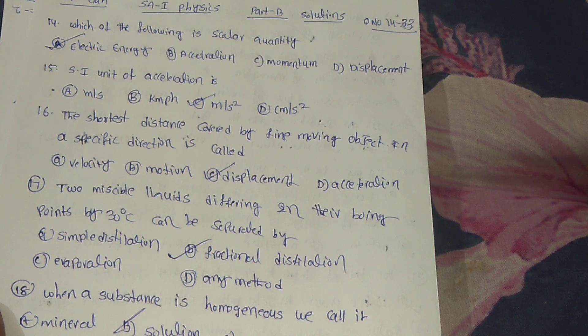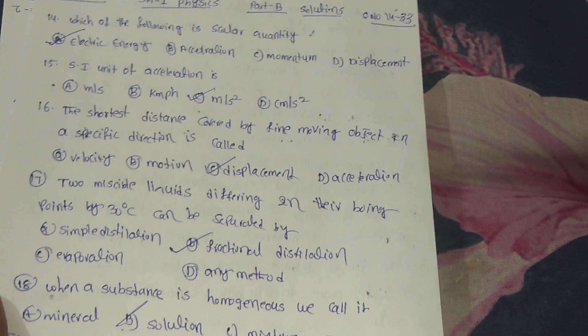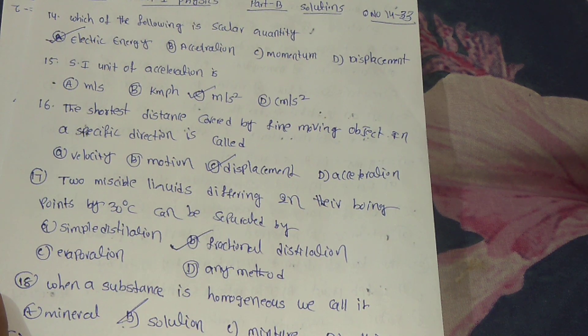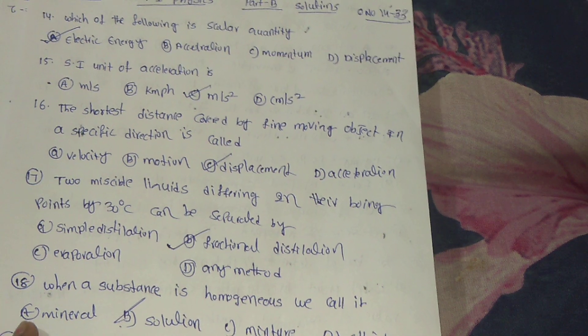Next, two miscible liquids differing in their boiling points by 30 degrees Celsius can be separated by? Answer is fractional distillation, option B.